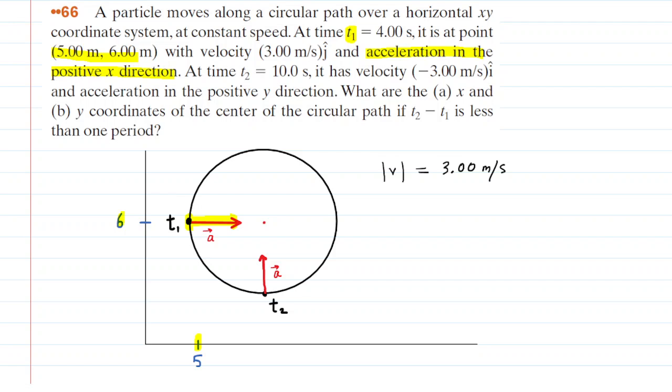But importantly, we are expected to know that with circular motion, the acceleration will point towards the center of the circle. So we already know that the center of the circle would be located where this little red dot is.